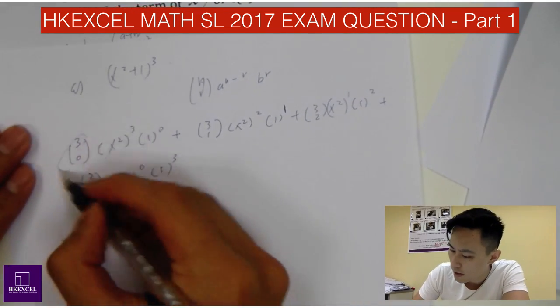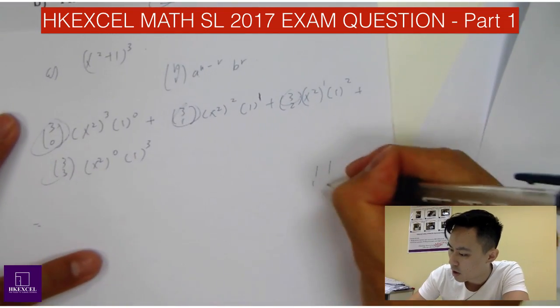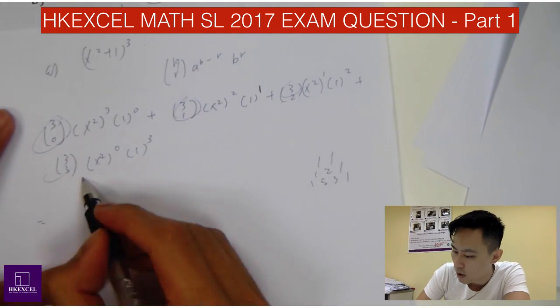So how do you find out this value? So you can just use the Pascal triangle: 1, 1; 1, 2, 1; 1, 3, 3, 1. So 1, 3, 3, 1.